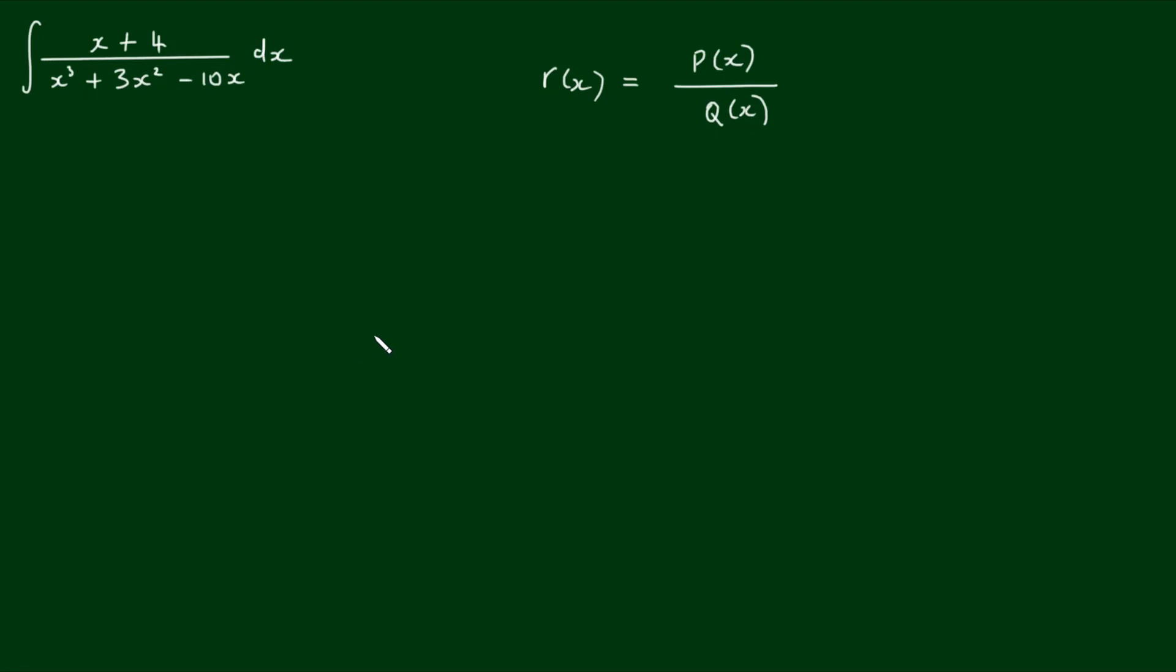My preferred approach would be first to see if we can simplify this integrand with long division. So in the first step, try to simplify. We're going to divide the denominator, x cubed plus 3x squared minus 10x, by the numerator, x plus 4.